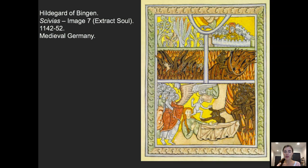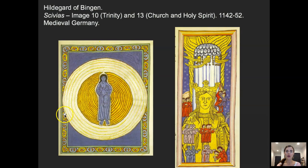Here are more images from Scivias, most related to the divine and to salvation. Image seven shows the extraction of the soul — the idea of when someone dies, the soul is extracted, and the debate between heaven and hell about where the soul will go, very much on the minds of those in Romanesque Europe. Another example shows her vision of the Trinity: God in three parts, the church, and the Holy Spirit. Very creative renderings that all give a sense of her vision. We don't know if women artists actually created these — it may have been male artists — but Hildegard would have overseen it. Hildegard believed women weren't necessarily equal to men, but that women could have important contributions.